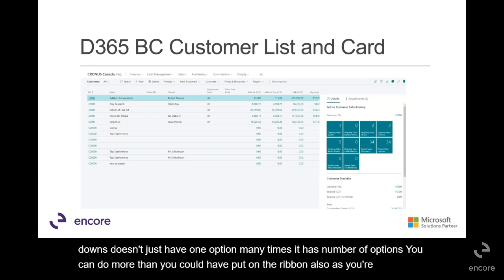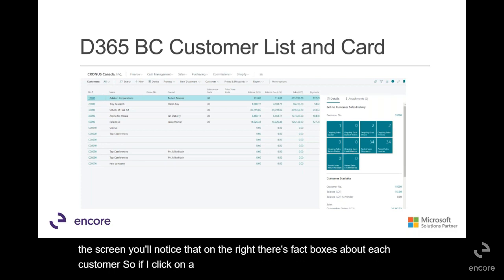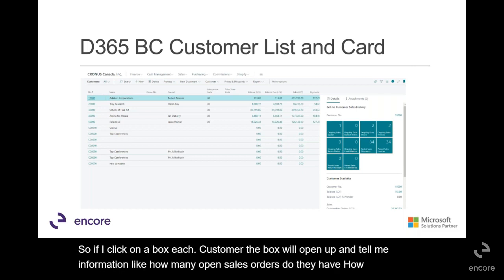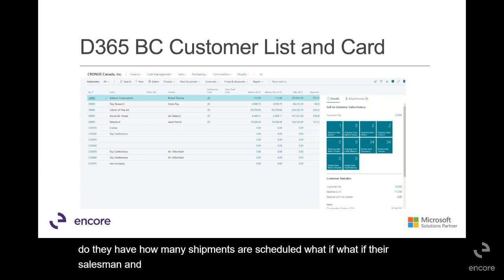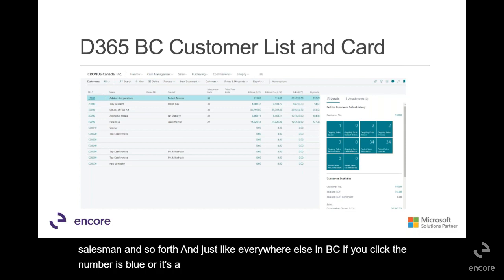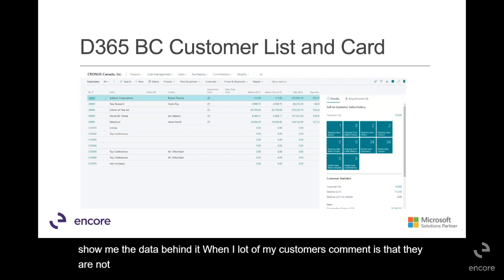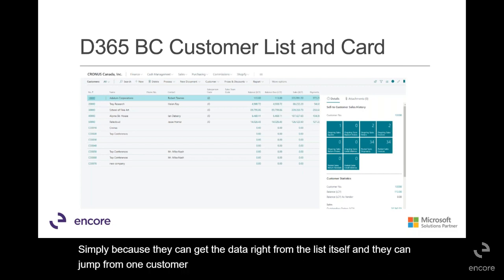As you're going down the screen, you'll notice that on the right there are fact boxes about each customer. If I click on a customer, the box will open up and tell me information like how many open sales orders they have, how many quotes, how many shipments are scheduled, and what their sales have been. Just like everywhere else in BC, if a number is blue or it's a fact box, you can click on it and it's a drill-down that shows you the data behind it. A lot of customers comment that they are not going into the customer card nearly as much as they used to in Nav, simply because they can get the data right from the list itself and jump from one customer to another very quickly.